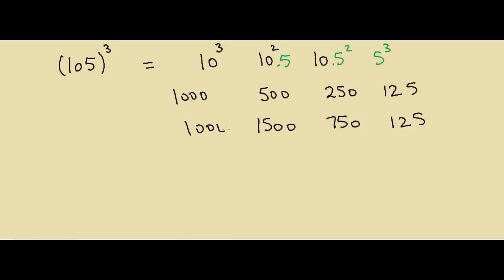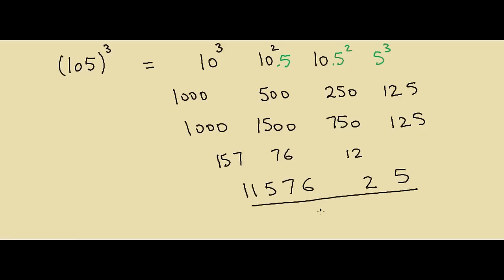Adding them all together: 125, then 1000, then carry-overs — 5 with 12 as carry-over, giving 2 with 76 as carry-over, then 6 with 57 as carry-over. Adding it all together gives 1-1-5-7, so the answer is 1,157,625.